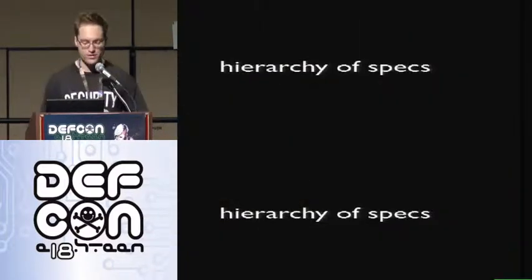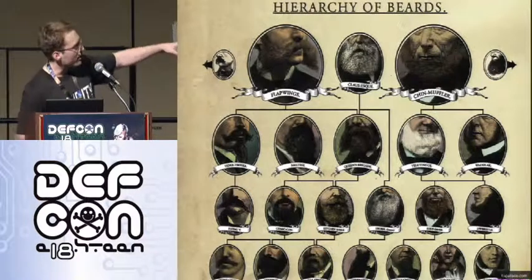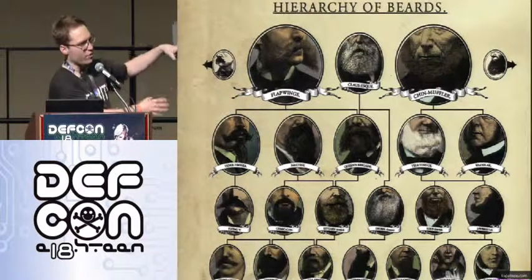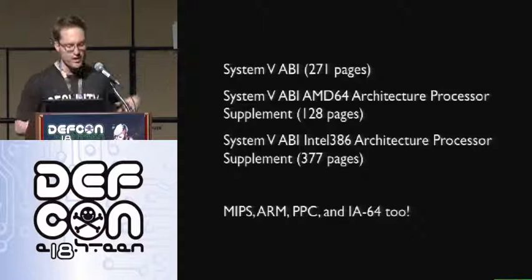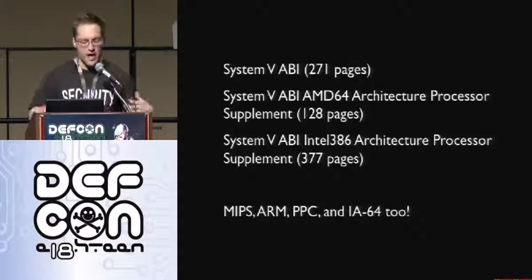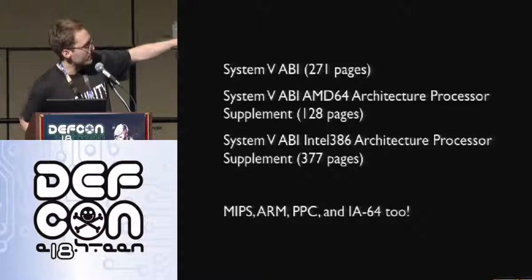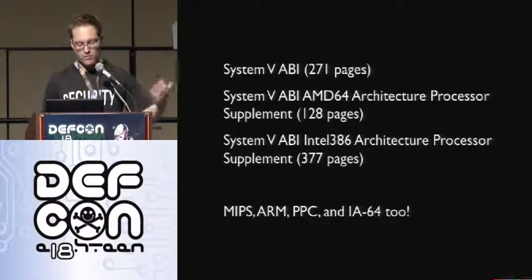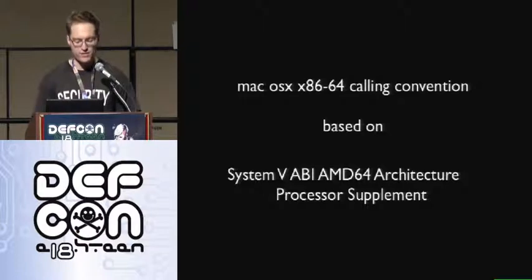The great thing about ABIs is that they form a hierarchy, kind of like a hierarchy of beards. You have the big System V ABI, which is like 200 pages, and it has sections where it says open up your architecture-specific ABI and read that one. The AMD64 ABI has a page that says everything here is true, but you also need to read the i386 ABI. So if you want to understand what's going on, you need to read like 700 pages. There are also ABIs for MIPS, ARM, PPC, and Itanium. Lucky for us, the x86-64 calling convention on OSX is based on the System V AMD64 ABI, so there's some overlap and we get saved a little bit.